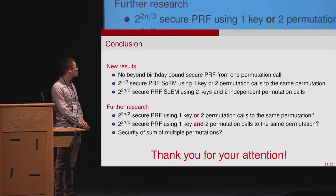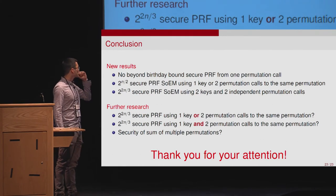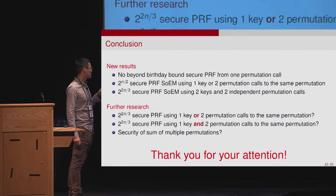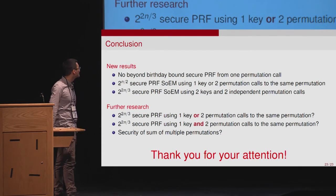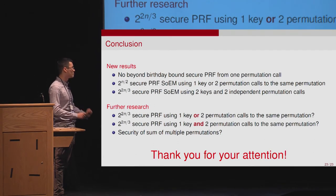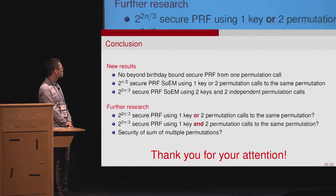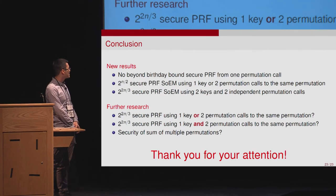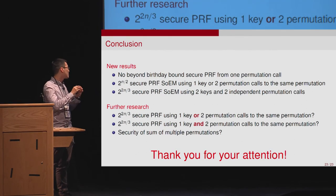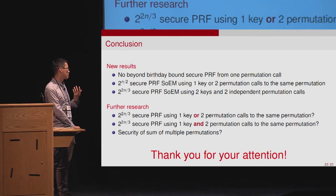Audience question: Can you remind us about the best construction with beyond-birthday-bound security using only one permutation, if multiple calls to that permutation are allowed? The speaker responds: If multiple calls to the same permutation are allowed with multiple keys, the Sum of Permutations and Sum of multiple permutations can be efficient because you can evaluate permutations simultaneously. However, if restricted to just one permutation, the speaker is not certain what the security bound would be.